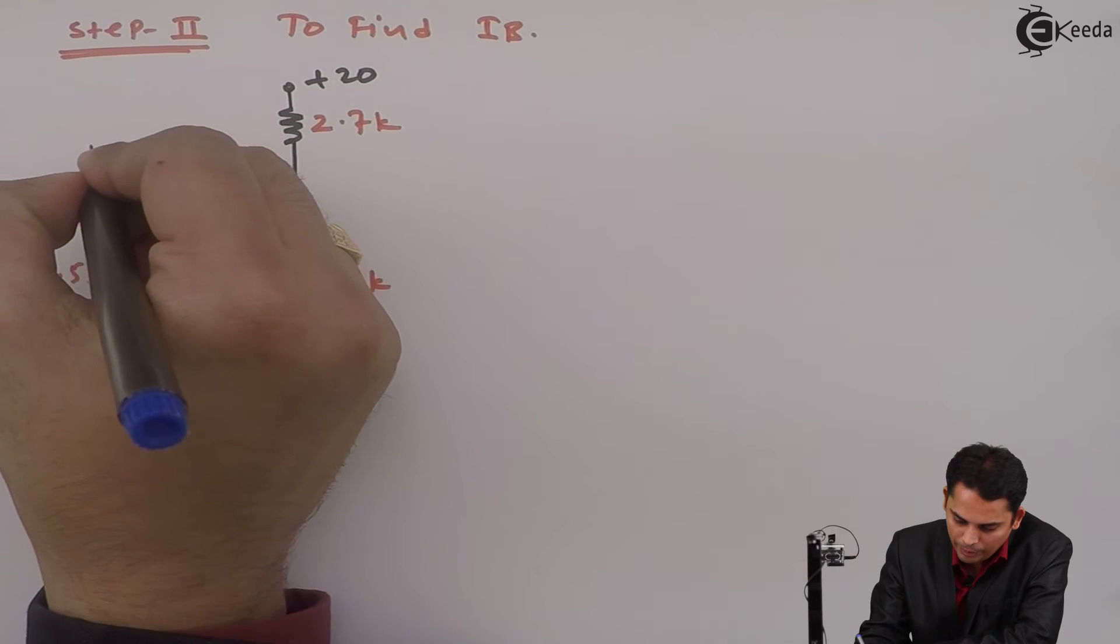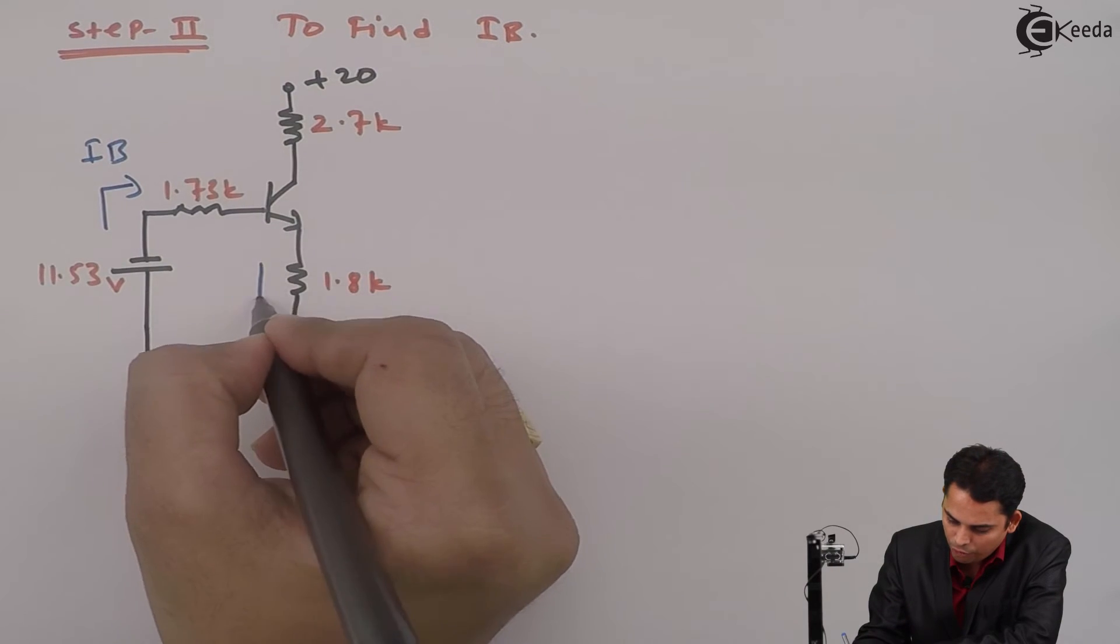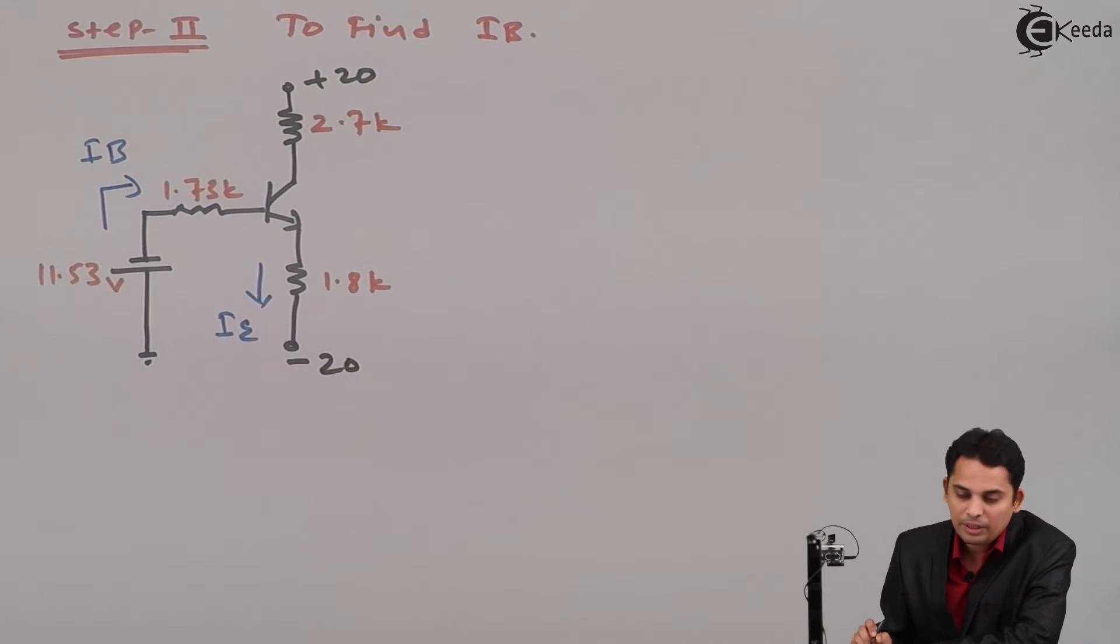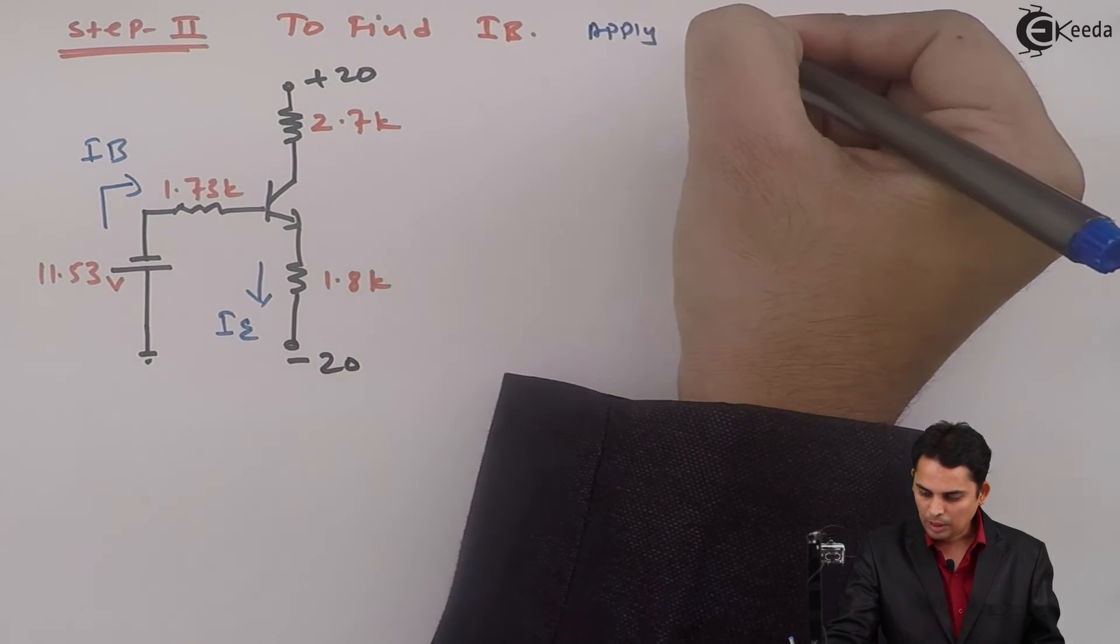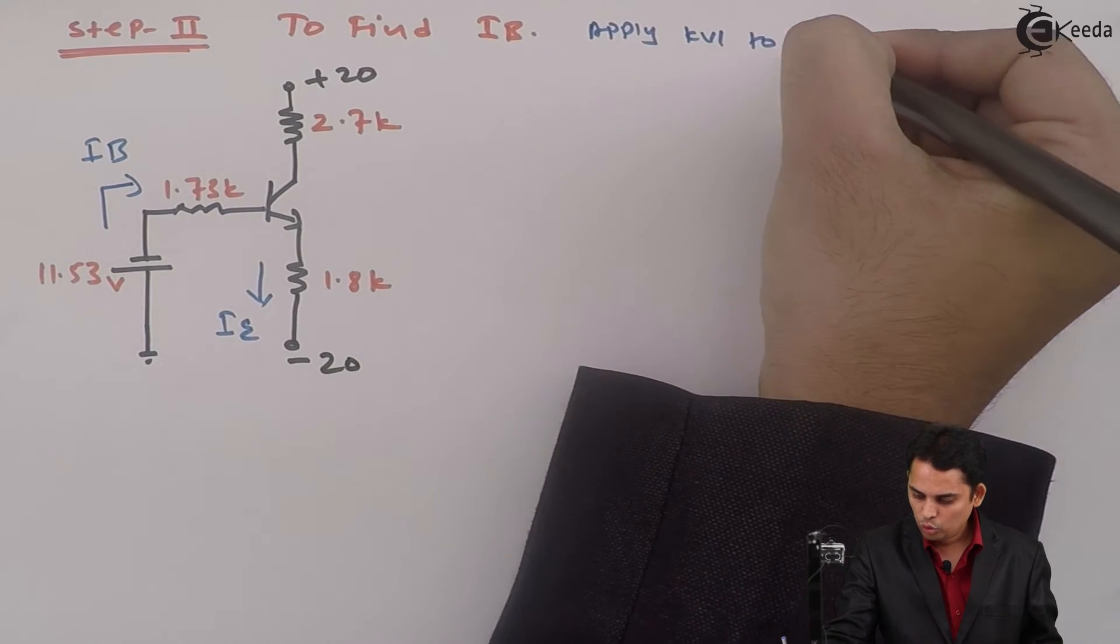Now the value of this battery is 11.53 volts whereas this resistor is 1.73K. Current flowing from this will be base current IB and from this will be emitter current IE. Now apply KVL to the input.